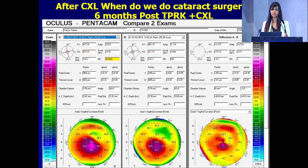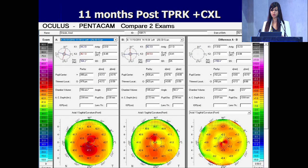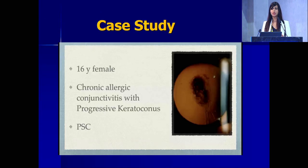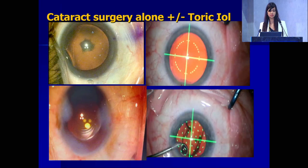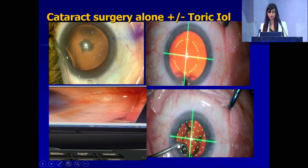When do we do cataract surgery after cross-linking? If it is a younger patient, wait for at least 6 months because it takes 6 months for the corneal topography to stabilize. This was a young 16-year-old where we did cross-linking first because she was a steroid user who developed a cataract due to allergic eye disease. We stabilized the allergy and then planned the surgery 6 months after that.